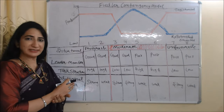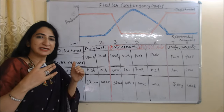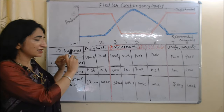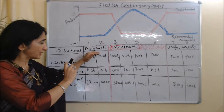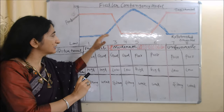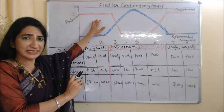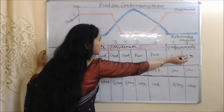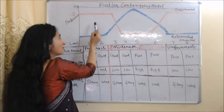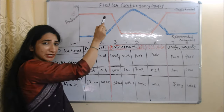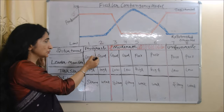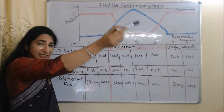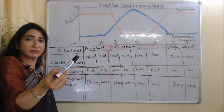As we earlier discussed, according to this theory, leadership styles depend on the situation. In this diagram, you can see that in both favorable and unfavorable situations, the task-oriented leader is leading. The curve of the task-oriented leader is above the curve of the relationship-oriented leader in both favorable and unfavorable situations. That means when the situation is favorable or unfavorable, the task-oriented leader is performing well.